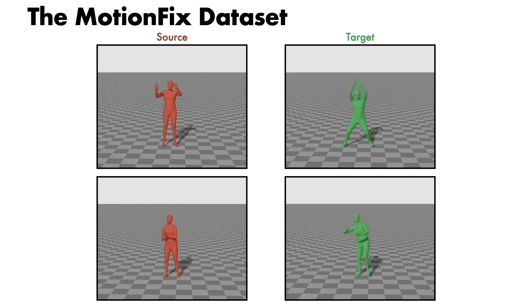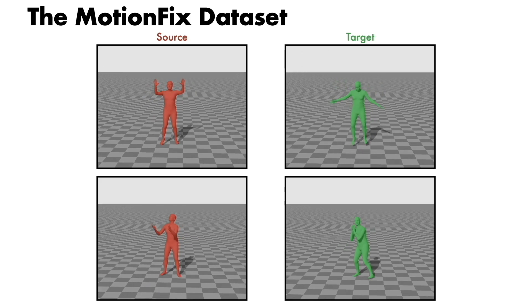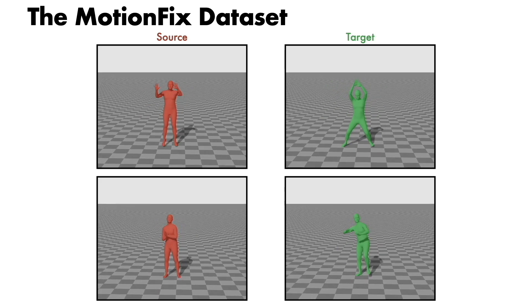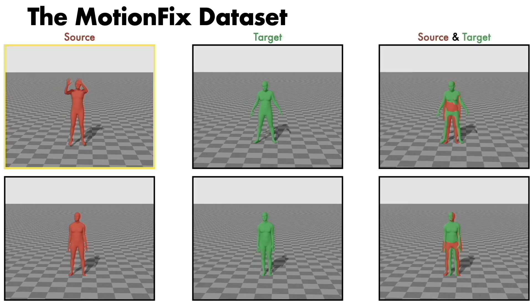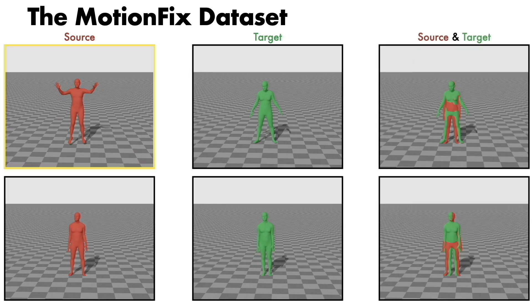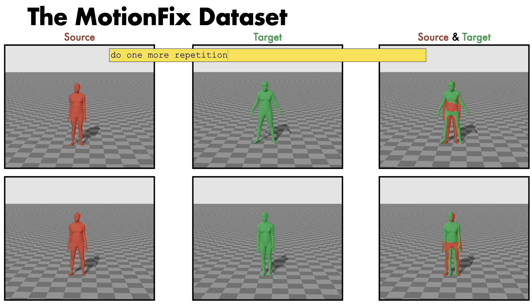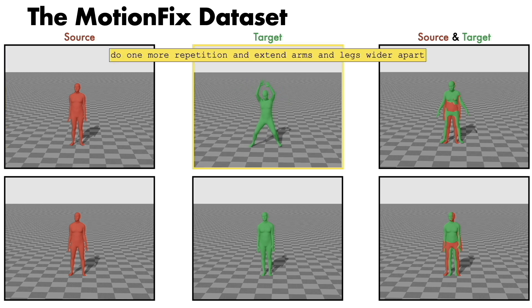Given two similar motions, source in red and target in green, annotators type text describing the difference. For example, do one more repetition and extend arms and legs wider apart.